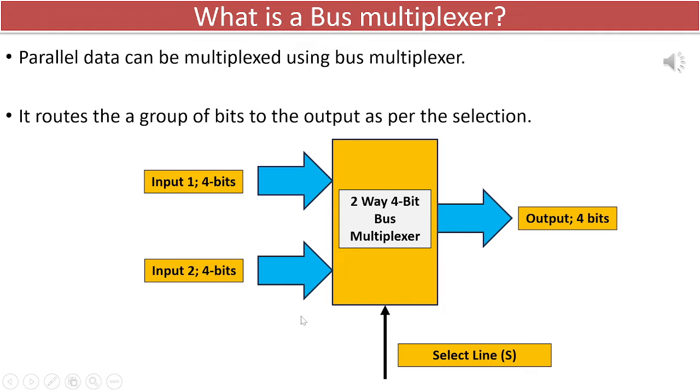Each input can be seen as a channel, and these channels carry 4-bit wide buses with digital information transmitted in parallel. Depending on the value of digital logic at the select lines, input 1 or input 2 get selected at the output.